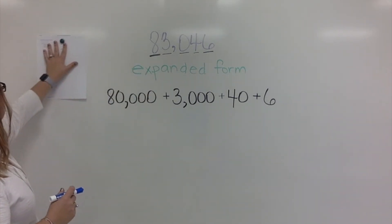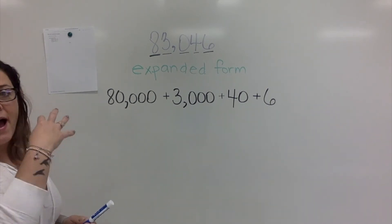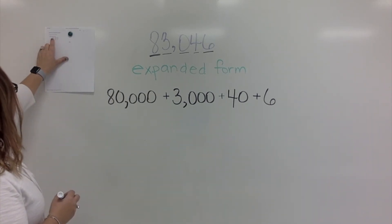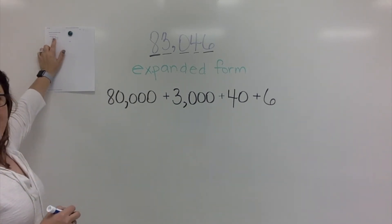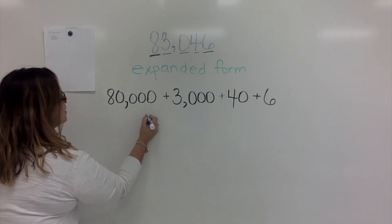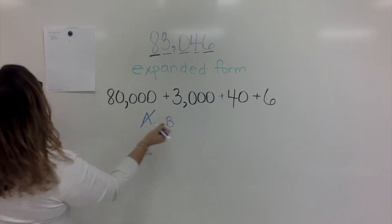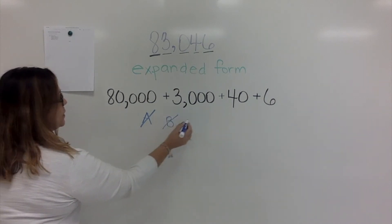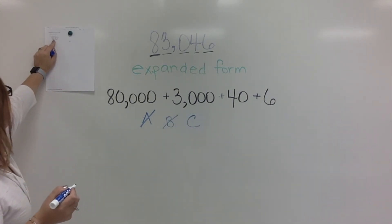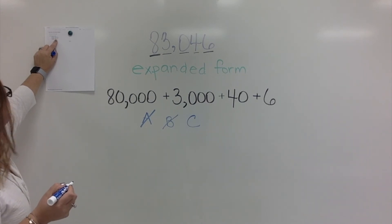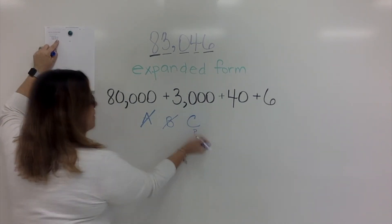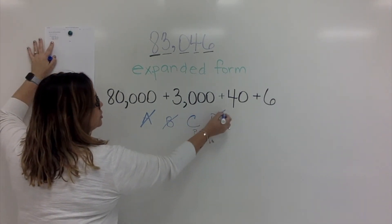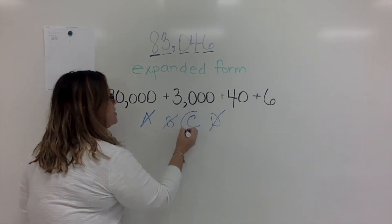Now if you look at your choices: A says 80,000 + 30,000 — so we know it is not A. B says 80,000 + 3,000 + 400 + 6 — so we know that can't be our answer either. C says 80,000 + 3,000 + 40 + 6 — we're pretty sure that might be our answer. D says 80,000 + 300 — so we know that cannot be it. Therefore C is the correct answer.